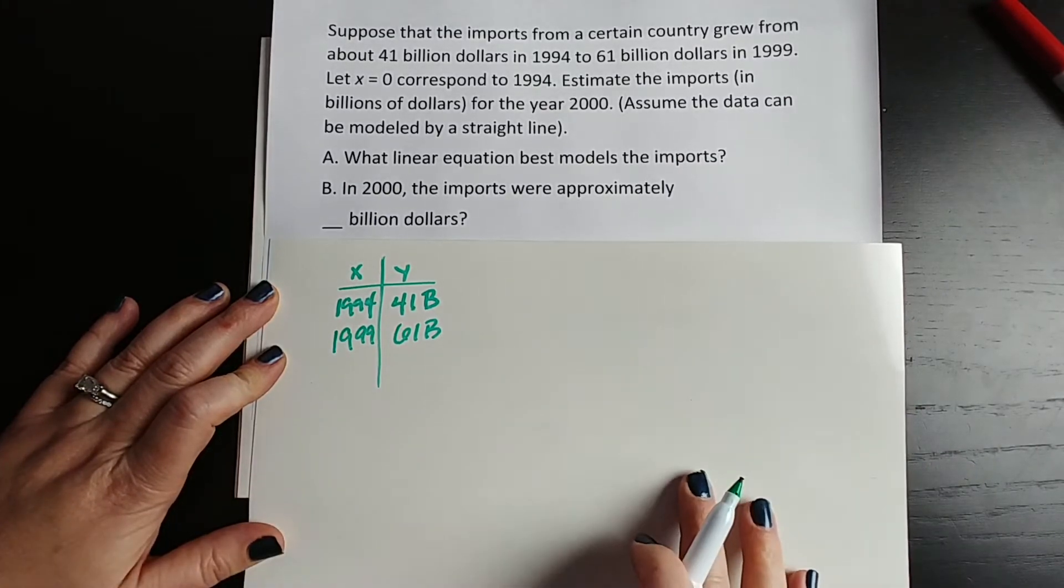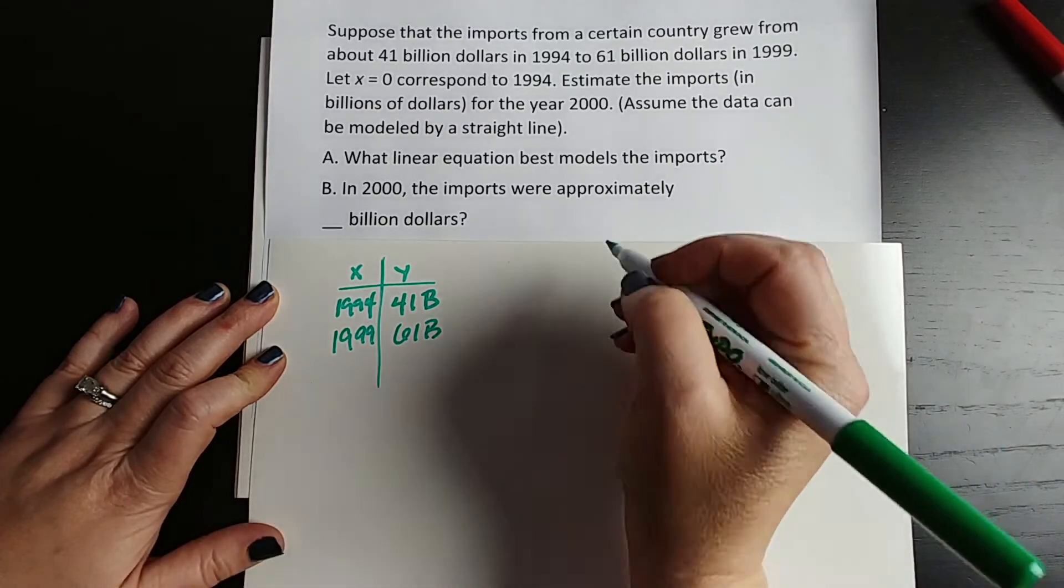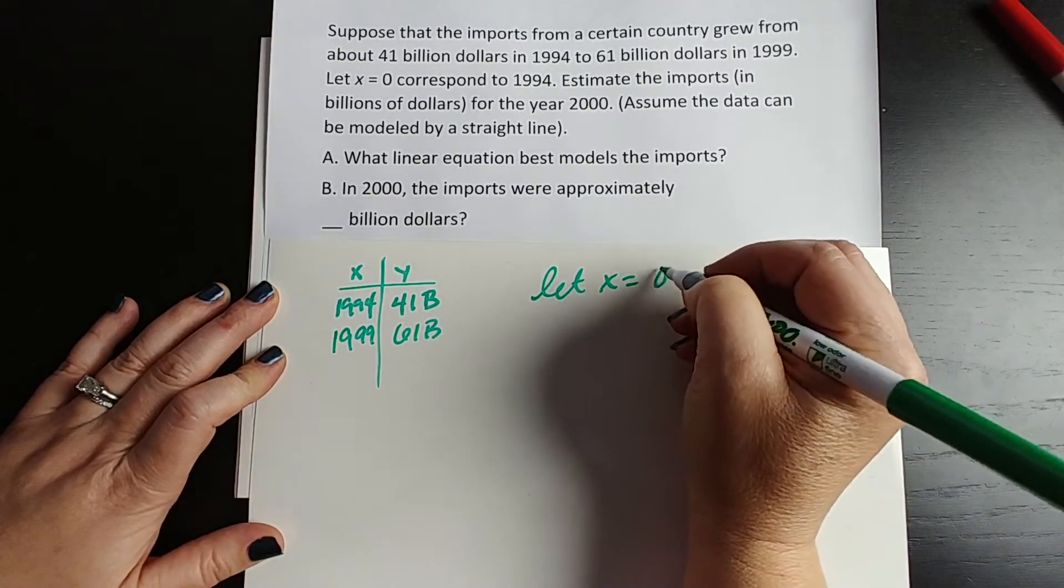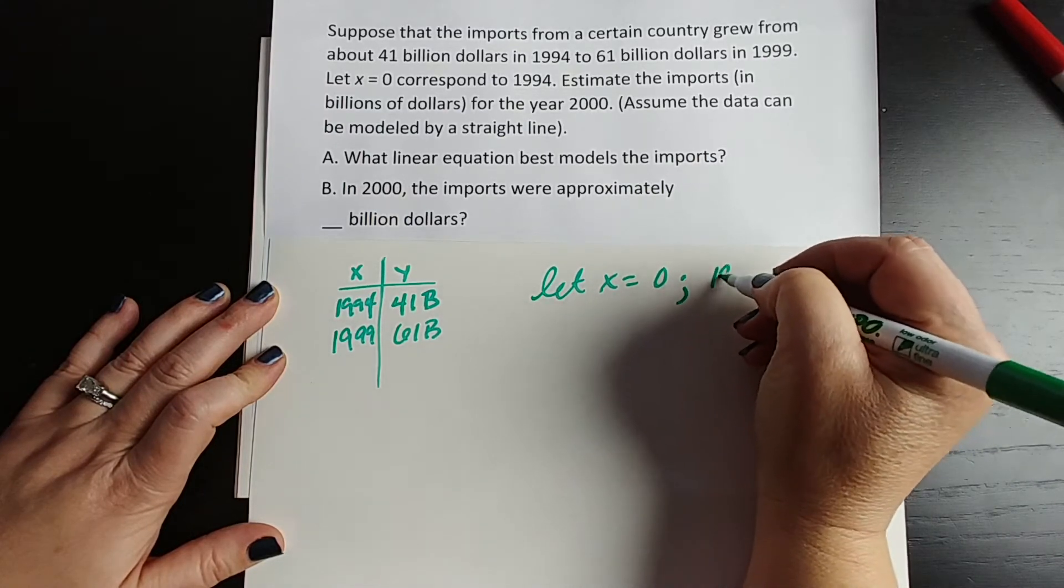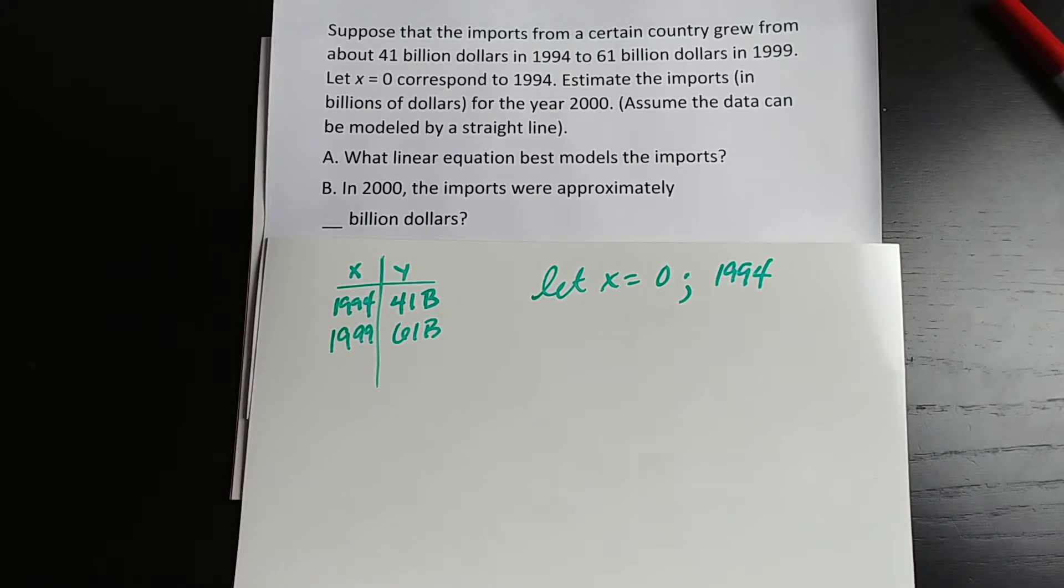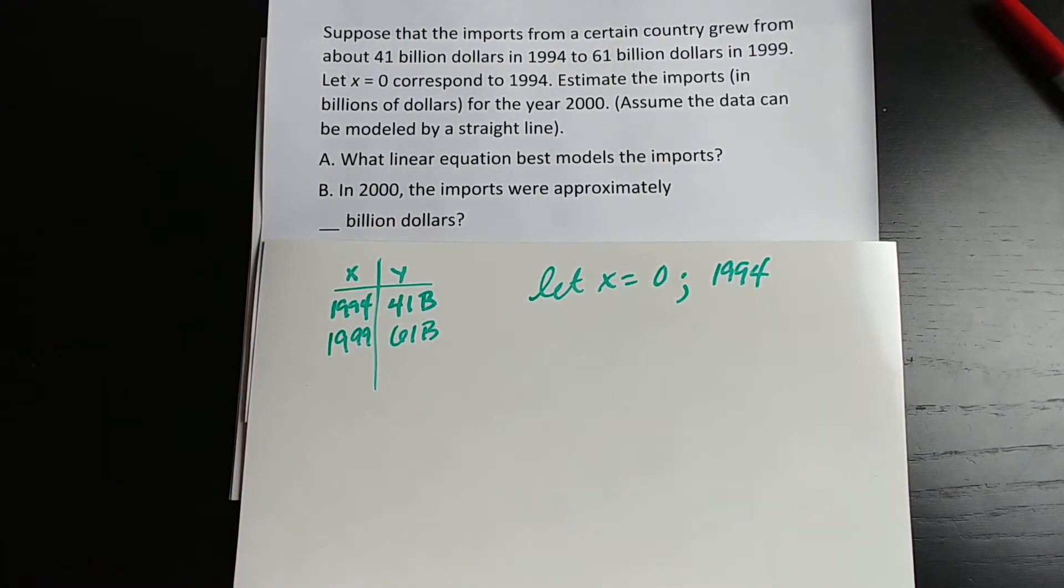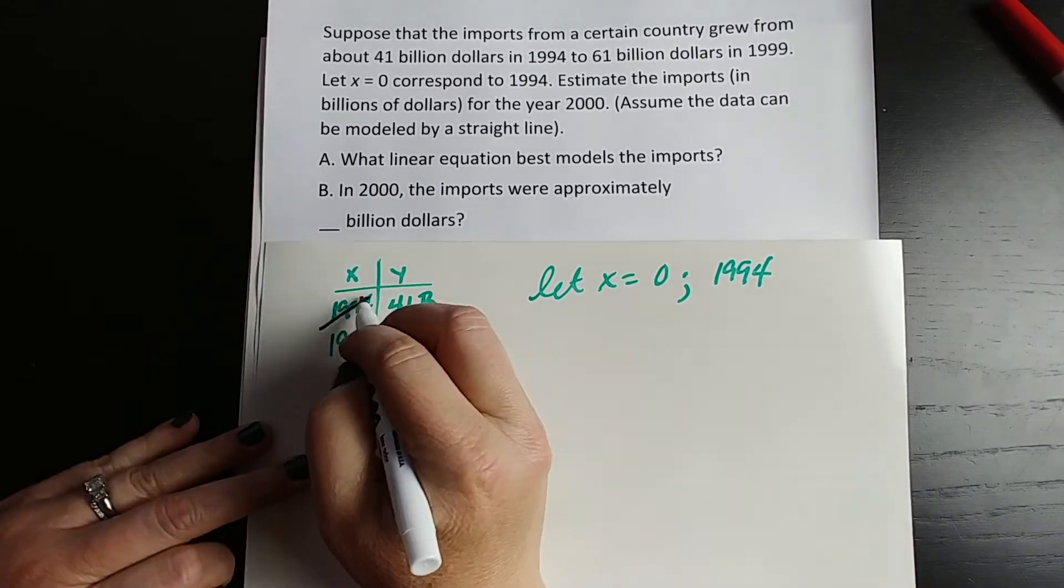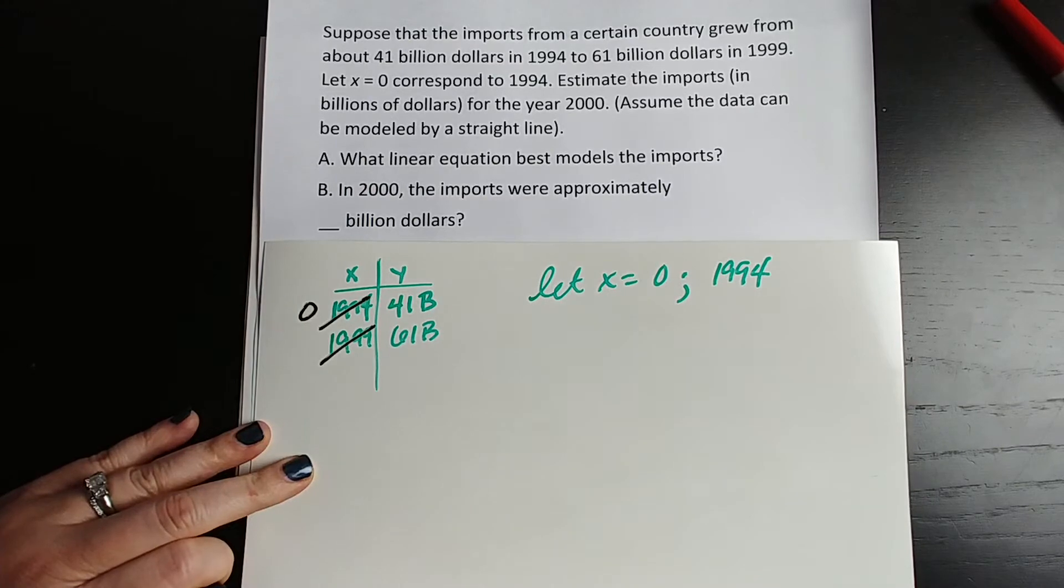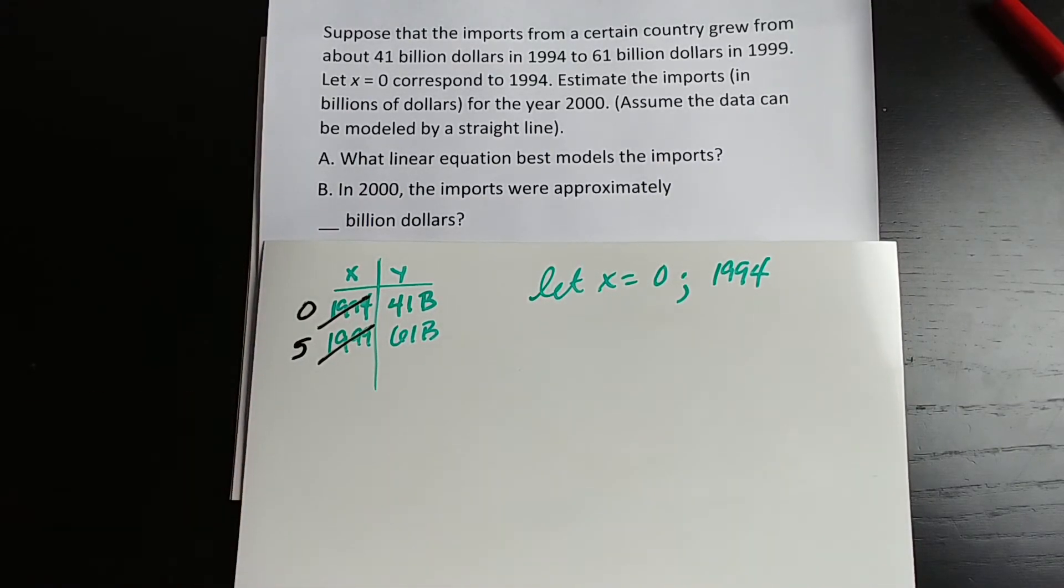You want to treat these like coordinate points, except we're not going to use 1994 and 1999, because they said, let x equal 0 correspond to 1994. I know that it is a little confusing when they say things like that. All they mean is, instead of 1994 here, your x value, you want to treat this as 0. And then counting up from 94, that would make 1999 an x value of 5.